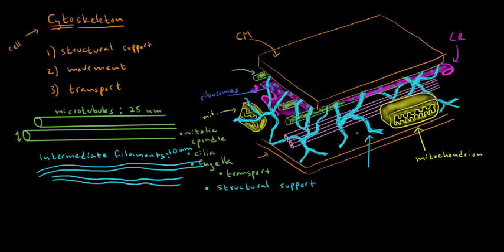The intermediate filaments provide structural support in a very similar way. We can see that they help resist mechanical stress and help the cell retain the shape that they're supposed to have in a way that's very similar to the springs inside a mattress.